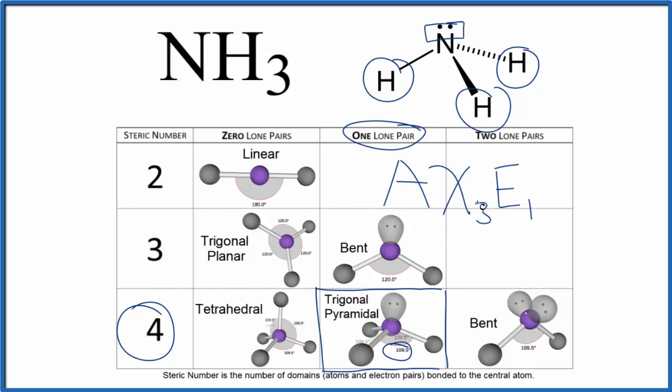So AX3E, if you look that up on a table, trigonal pyramidal. If you want to look at the electron geometry, that would be tetrahedral, because we have four things bonded to the central atom.